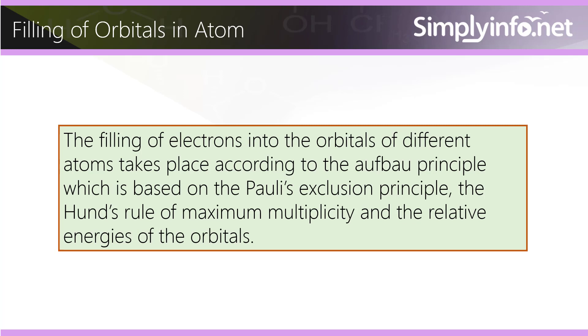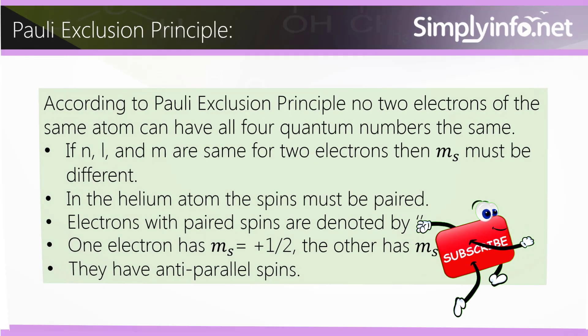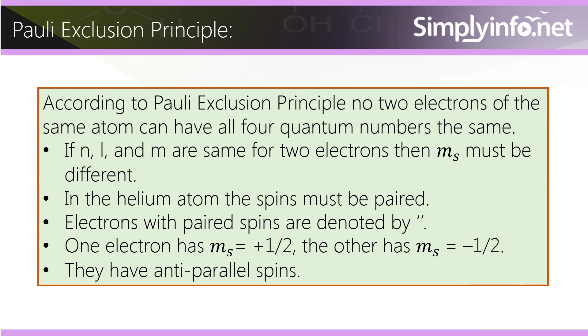The Hund's Rule of maximum multiplicity and the relative energies of the orbitals. Pauli Exclusion Principle. According to Pauli Exclusion Principle, no two electrons of the same atom can have all four quantum numbers the same.